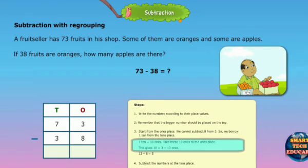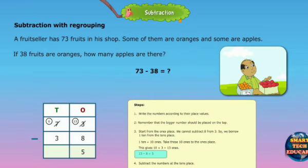1 ten equals 10 ones. Take these ten ones to the ones place. This gives 10 plus 3 equals 13 ones. 13 minus 8 equals 5.